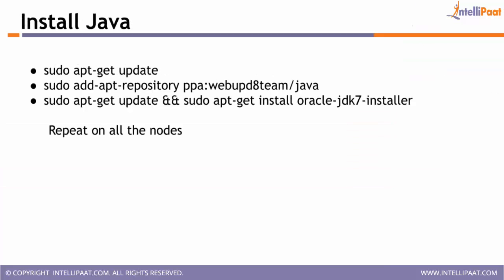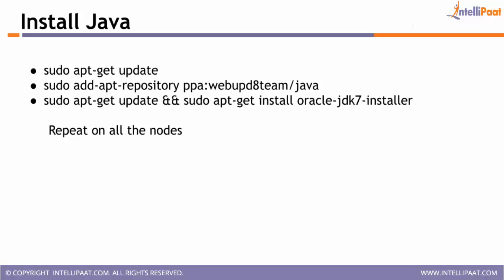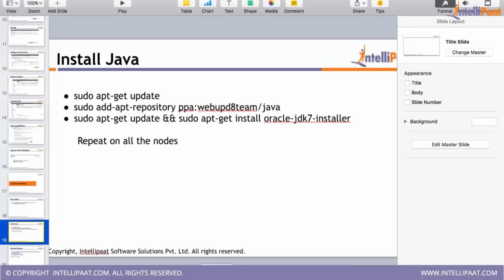For the cluster installation, first we have to log into every node and install Java, because Hadoop uses Java. We have to install JDK 7 on each machine. To install it, 'apt-get' is the installer for Ubuntu — similar to yum for CentOS. Run 'sudo apt-get update' to update its repositories, then add the location where it can find Java, and then install JDK. We have to repeat the same commands on every machine.